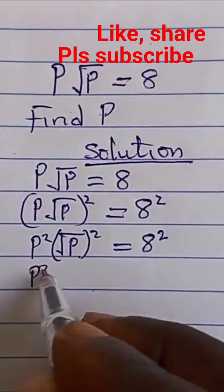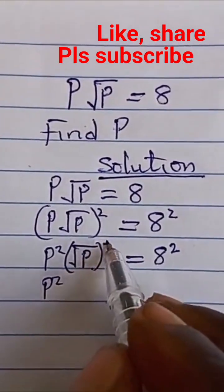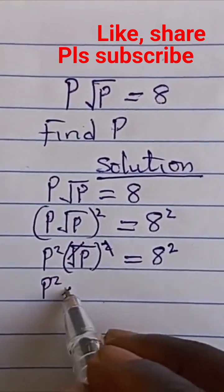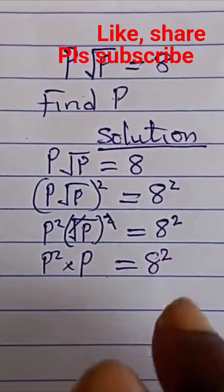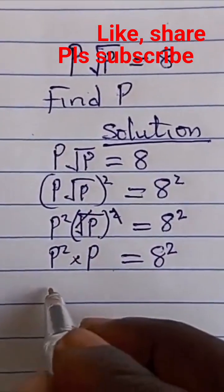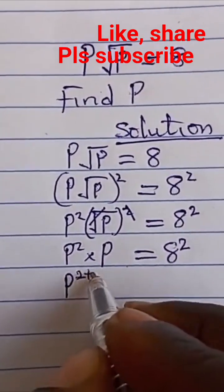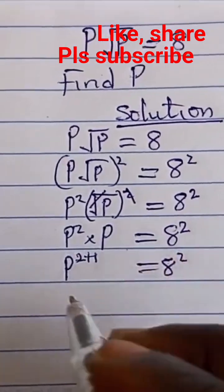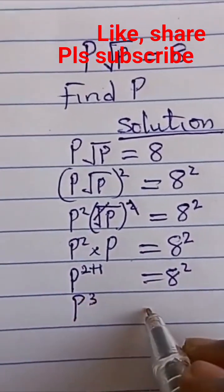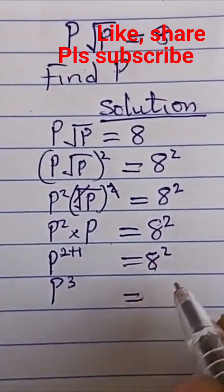Next, the square root and square cancel out, leaving us with P² times P equals 8². Applying the law of indices, we have P^(2+1) equals 8². So we get P³ equals 8².